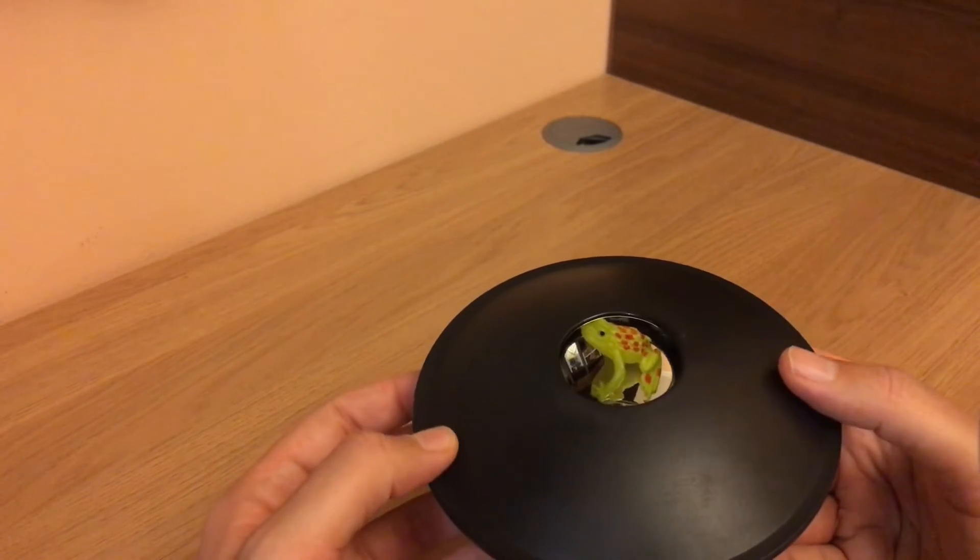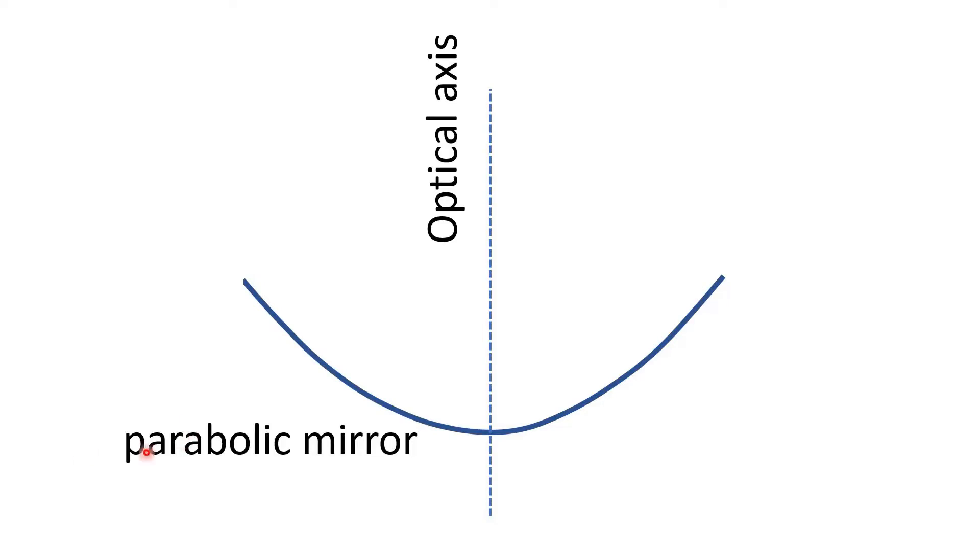Okay, so here is how it works. Let's start with explanation how this toy works. First we need to know what is a parabolic mirror. A parabolic mirror is a curved mirror.